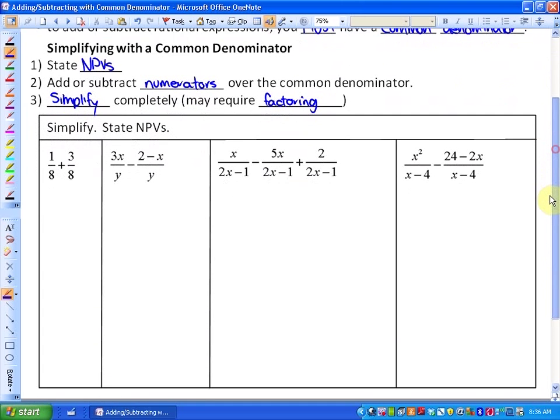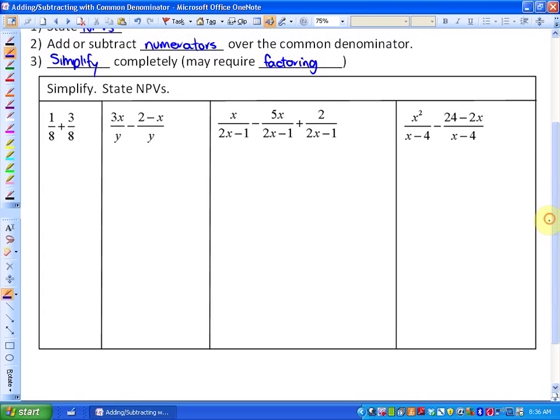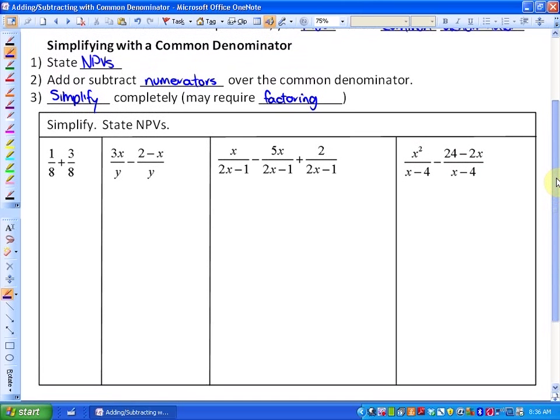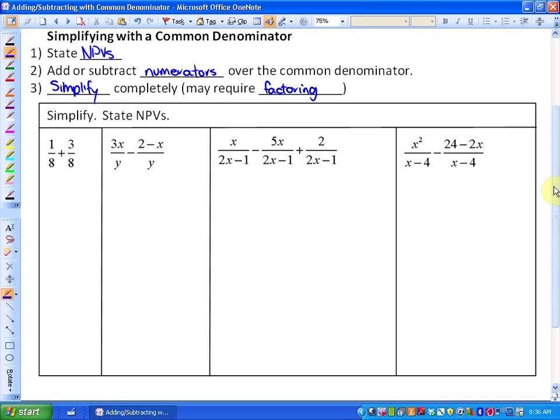We've got four examples to look at. One is based on something from previous math courses. One-eighth plus three-eighths already has a common denominator, so that is essentially 1 plus 3 over 8, which we know is four-eighths.